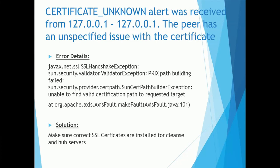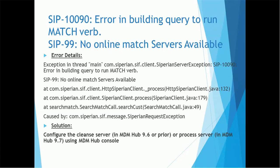The next error is SIP-10090: 'Error in building query to run match verb: No online match server available.' The issue could be that you have not configured the process server, or you have configured it but it is not in a running state. Make sure your process server is configured correctly and is in a running state. If it is not, just hit the Start button to bring it online — the error is very easy to fix.